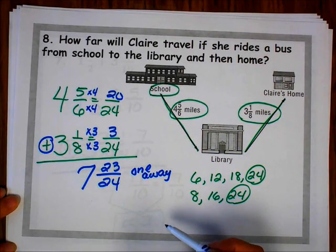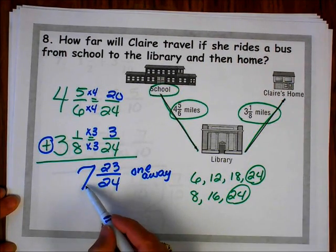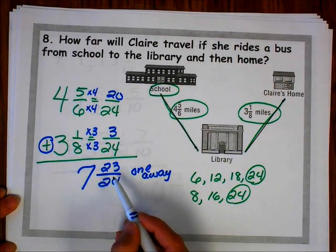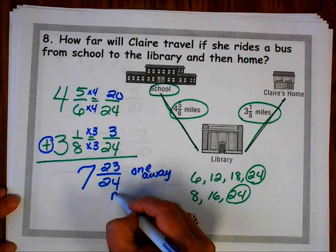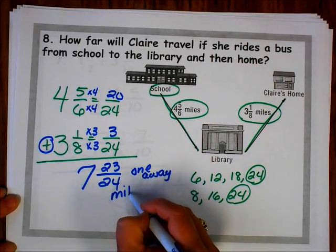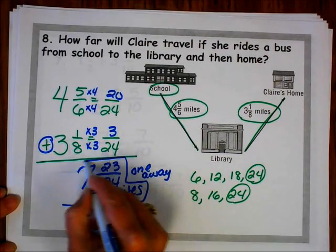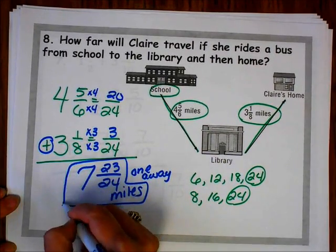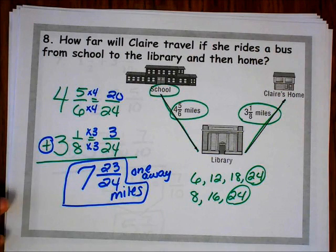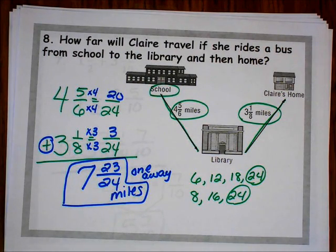It is a word problem, so I have to be sure to label my answer. So it's 7 and 23 twenty-fourths miles. Don't forget to label on every word problem.